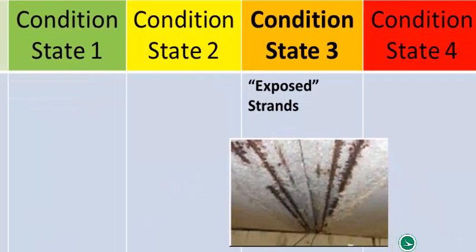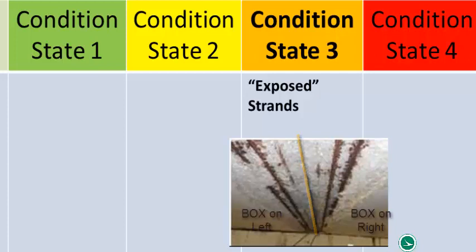Exposed strands become common once moisture starts wicking through and getting between adjacent boxes through the shear keys, allowing the corrosive process to begin with chloride. This image shows a photo taken down the keyway on the underside of a pre-stressed box beam bridge. There are two beams — one on the left, one on the right — and each has exposed strands. The quantity is measured in linear feet of the beam, with each linear foot going into one of the condition states. If there are multiple exposed strands, a good place to start is condition state three.